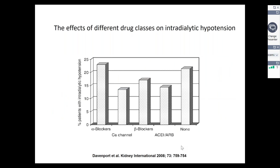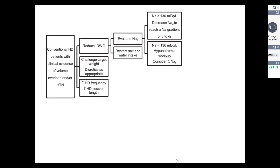In terms of hypertension, Andrew Davenport's publication in 2008 shows that if you were to reduce antihypertensives, the ones to start off with are alpha blockers, and then gradually reduce the other agents depending on the patient's need and blood pressure control.